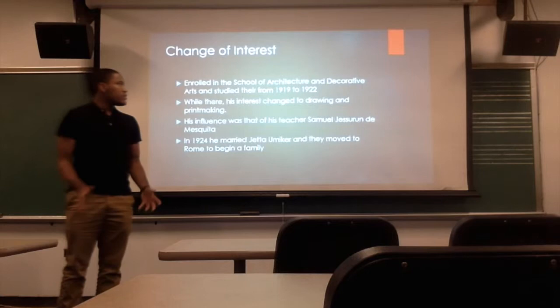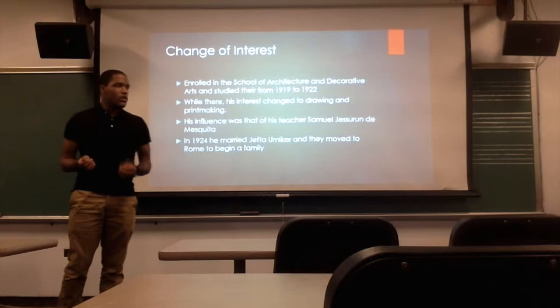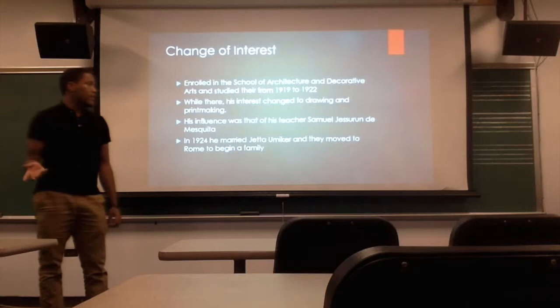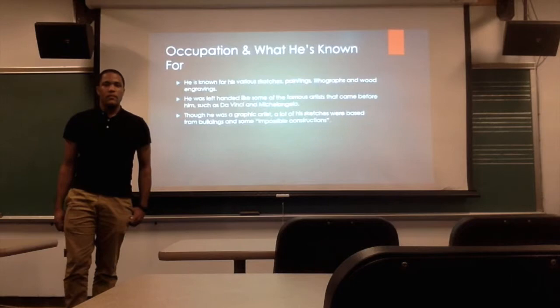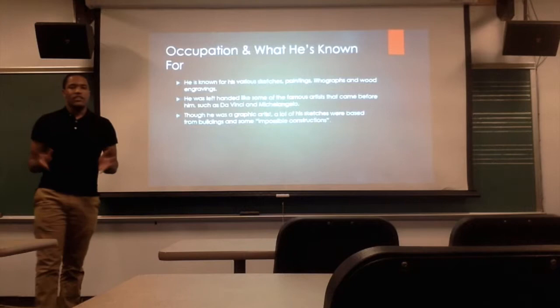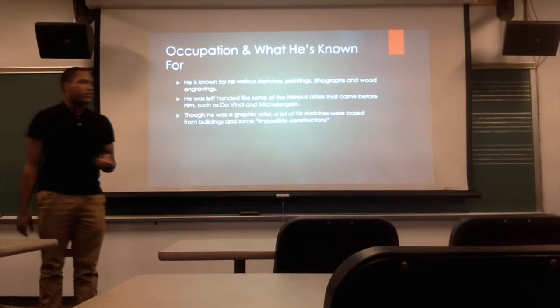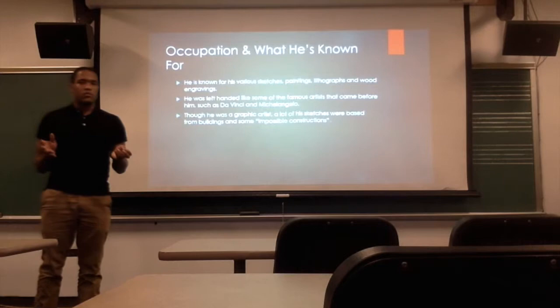While he was there, his interest began to change more from architecture to drawing and painting, which he was very good at. His influence that helped him make that change was his teacher, Samuel T. Jessurun de Mesquita. In 1924, after school, he married Jetta Umiker, and they moved to Rome to start painting. He's known for his various sketches, paintings, lithographs, and wood carvings. He was left-handed, like some very famous artists like Da Vinci, Michelangelo, and countless others.